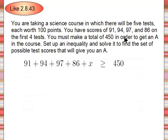450 is the smallest number that would give us an A. From here we just simplify both sides. The right side is already simplified, so I only need to add these numbers up over on the left side, and if I add them up I get 368.